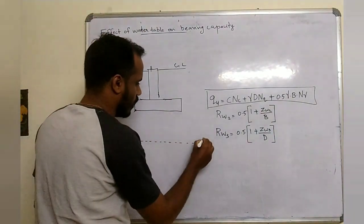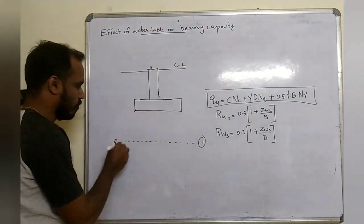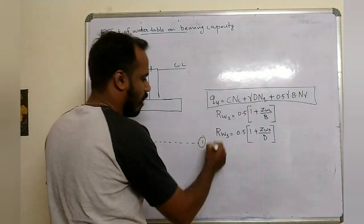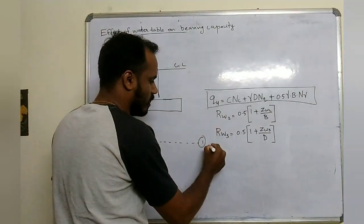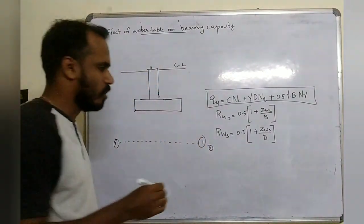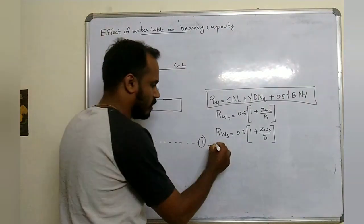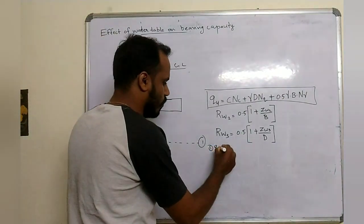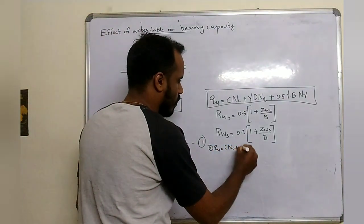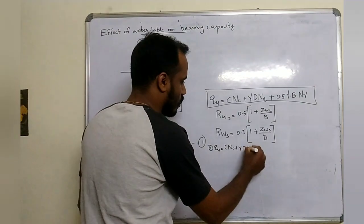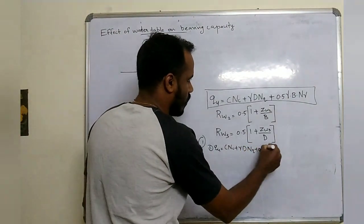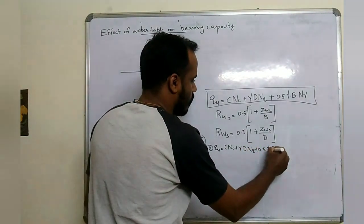We will take the ultimate bearing capacity formula — the basic equation: Q is equal to c·Nc plus gamma·D·Nq plus 0.5·gamma·B·N-gamma.